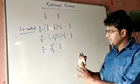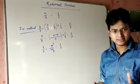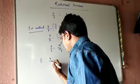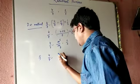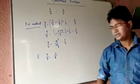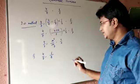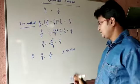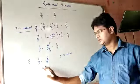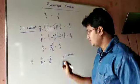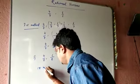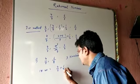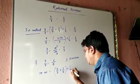Now I will explain all three methods by taking another question where the denominators are different. Suppose our question is four by seven and six by eight, and I am asking you to insert three numbers between these two numbers. Using the same first method, we add four by seven and six by eight and divide by one by two.